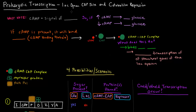In this video, I want to talk about the lac operon CAP site and catabolite repression. Before we can discuss this topic, we have to think about cyclic AMP and its importance in this system. Cyclic AMP is a signal of hunger for the prokaryote, and this signal is related to the amount of glucose around.